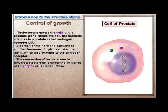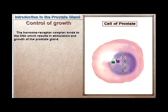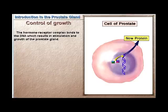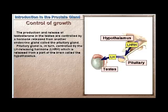Testosterone enters the cells of the prostate gland. Inside the cell, the hormone attaches to a protein called the androgen receptor (AR). A portion of the hormone converts to dihydrotestosterone (DHT), which also attaches to the androgen receptor. This conversion of testosterone to DHT is under the influence of an enzyme called 5-alpha reductase. The hormone-receptor complex then binds to DNA, resulting in stimulation and growth of the prostate gland.